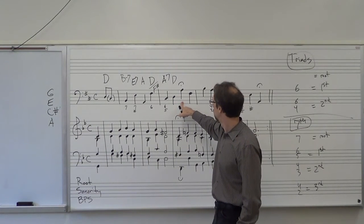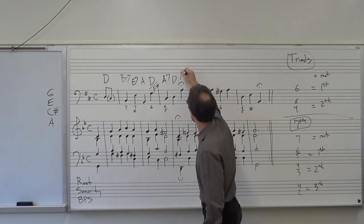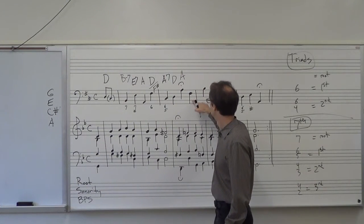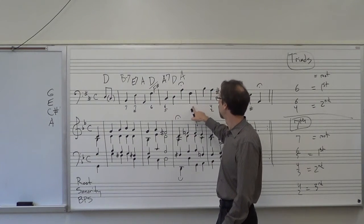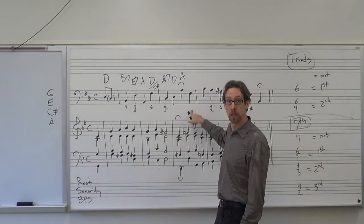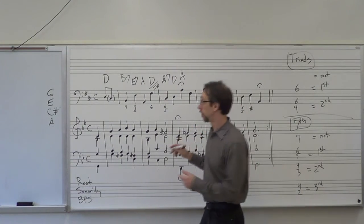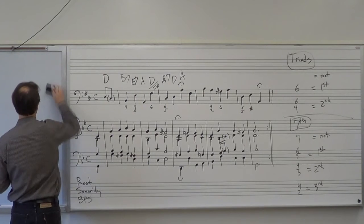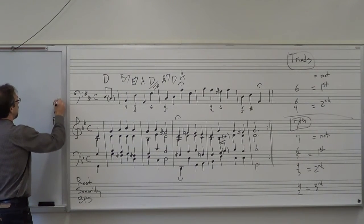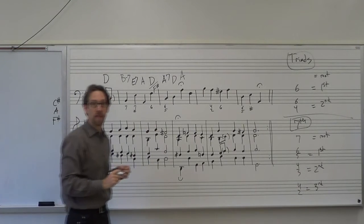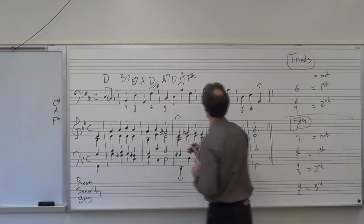Here we have an A with nothing underneath it, as before — so it's another A major triad. Then here we have an F sharp, but unlike before, there's nothing underneath it, so now it means root position. F sharp, A, C sharp — that is a minor triad. So I write F sharp with a minus sign.